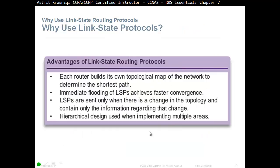Here are some advantages of link state routing protocols. Each router builds its own topological map of the network to determine the shortest path — it sees the whole picture, places itself at the center point, and finds the best path to the destination. Another advantage is that the immediate flooding of LSPs achieves faster convergence. LSPs are sent only when there is a change in the topology and contain only the information about that change — unlike RIP, which sends updates every 30 seconds. OSPF sends LSPs only when something has changed, and then sends only what has changed.